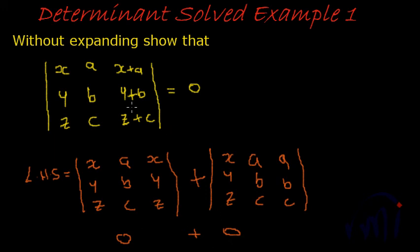So using property 5, we split the matrix. And then when we compare, you see that two columns have same elements. Hence, each of these matrix determinants are 0. So hence, the total value is 0. And that is the solution to this problem.